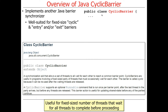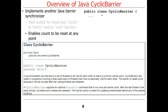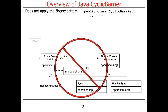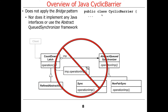It's most useful for a fixed size number of threads that want to wait for all threads to complete before they all proceed. The other thing it has that countdown latch does not is you can reset the count at any point, although it is a little bit surprising how it works internally. Internally, it does not apply the bridge pattern. It doesn't implement any Java interfaces or use the abstract queue synchronizer framework — it works by its own implementation.